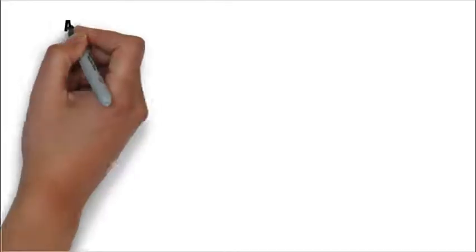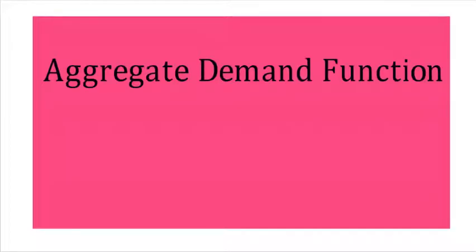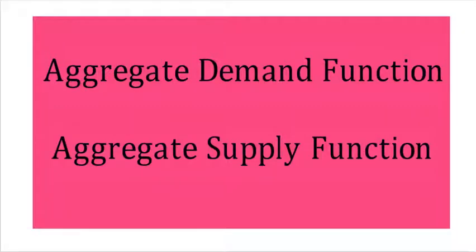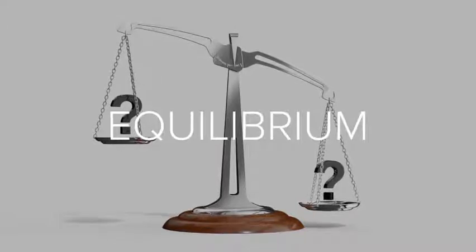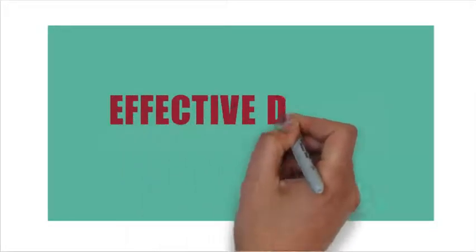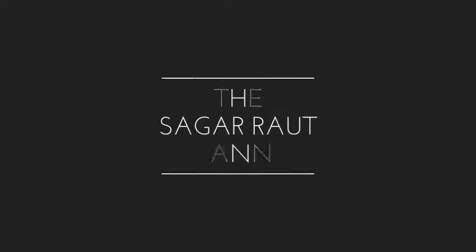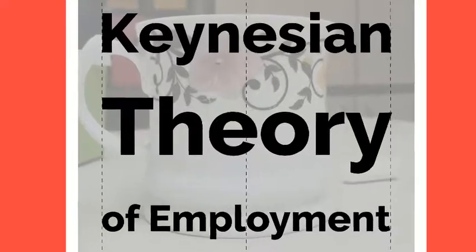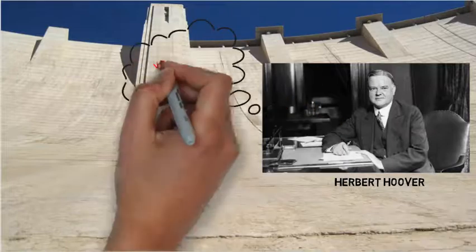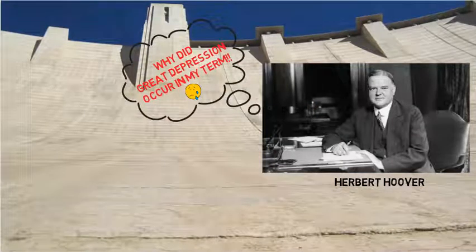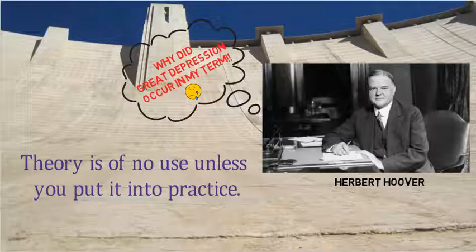Hi friends. So far we learned what aggregate demand and aggregate supply meant and what factors influence them. In this video, we'll see how the aggregate demand and aggregate supply functions look like and how equilibrium is achieved between them. We'll also learn what effective demand is and how greater demand for products can lead to higher employment and output. Let's begin.